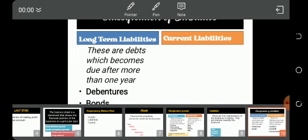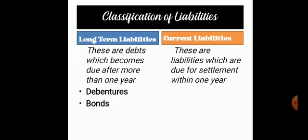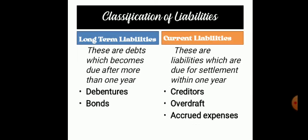Your current liabilities are liabilities which are due for settlement within one year. For example, if you have not paid your rent for the past three months, you are owing for three months — that is a current liability. Or if you have not paid salaries for the past two months — that is a current liability. These are due within a period of less than 12 months. Examples are your creditors, bank overdrafts, and accrued expenses.